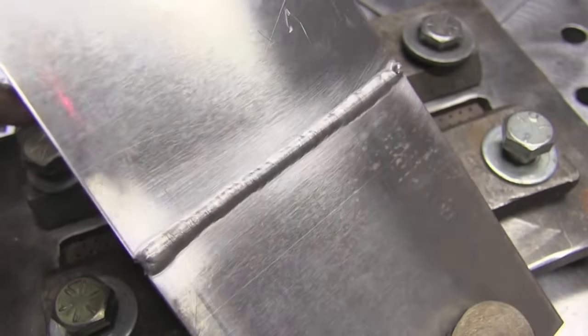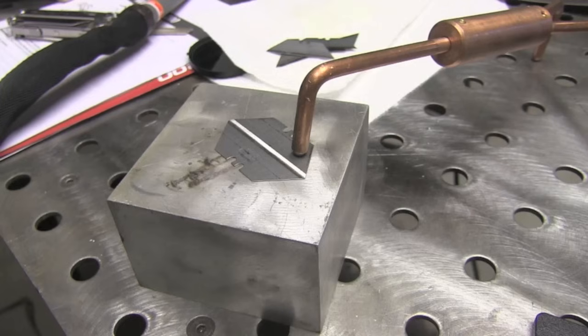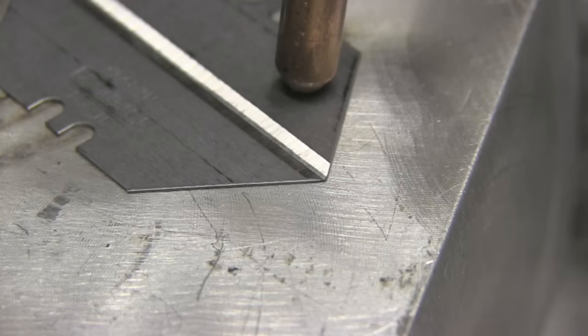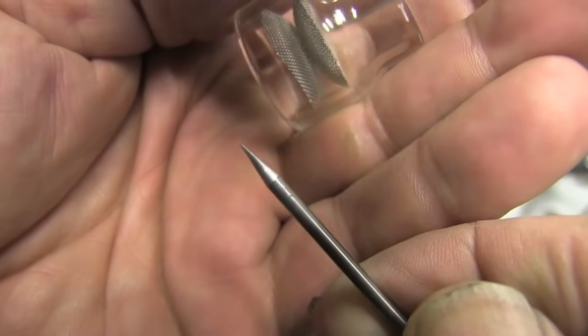All right, we'll go to steel now. I'm going to weld some of these box cutter blades. These mic out at 0.023, so just a little bit more than half a millimeter—not terribly thin, but thin enough to test the welder out.